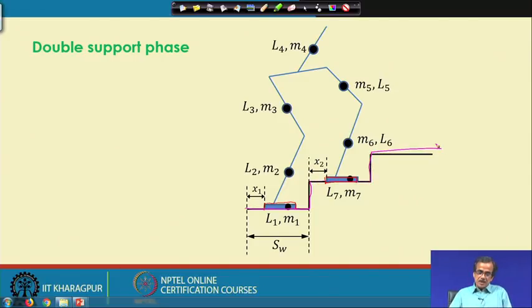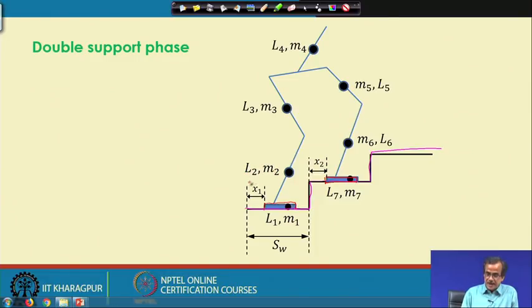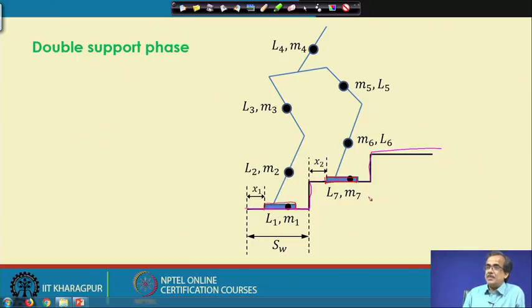L1 and M1 are the length and mass of the first link, that is the foot. Similarly, we have L2, M2 for the second link; L3 and M3 for the third; L4 and M4 for the fourth link; M5 and L5 for the fifth; M6 and L6 for the sixth; and L7 and M7 are the length and mass for the seventh link, which is also the foot.